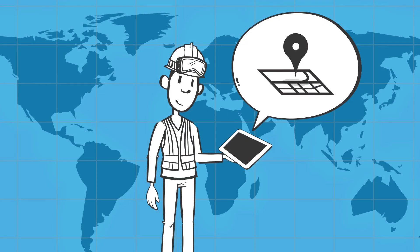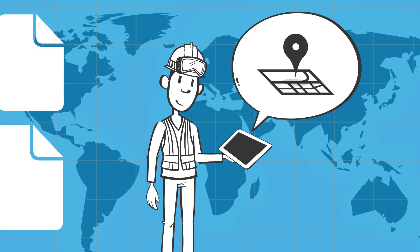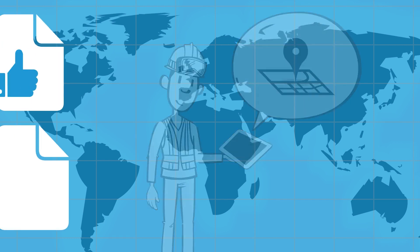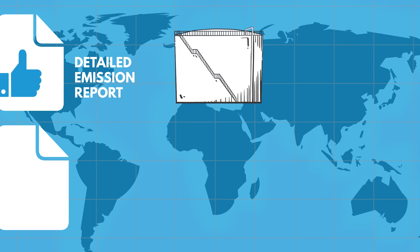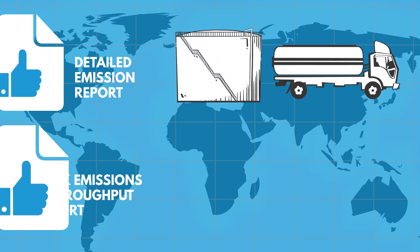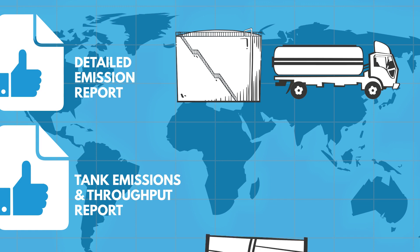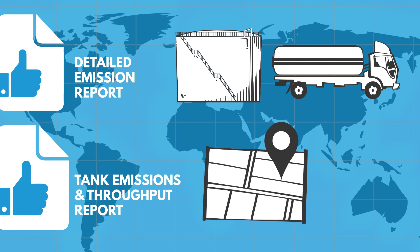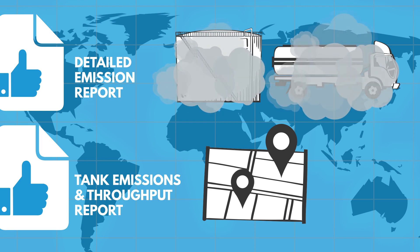We also track our tank emissions across sites using various reports from ERA. Our favorite reports are the detailed emission report that reveals emissions per source, and the tank emissions and throughput report that calculates tank emissions by location, helping our facilities pinpoint excessive emission sources and troubleshoot and prepare emissions reduction plans.